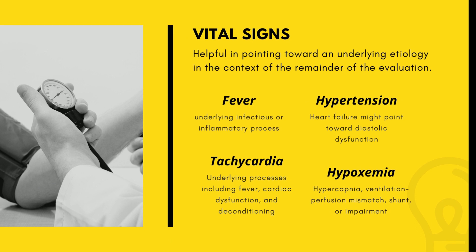Physical examination. Initial vital signs might be helpful in pointing towards an underlying etiology. For example, the presence of fever might point toward an underlying infectious or inflammatory process. The presence of hypertension in the setting of heart failure might point toward diastolic dysfunction. The presence of tachycardia might be associated with many different underlying processes including fever, cardiac dysfunction, or deconditioning. The presence of resting hypoxemia suggests processes involving hypercapnia, ventilation-perfusion mismatch, shunt, or impairment in diffusion capacity.